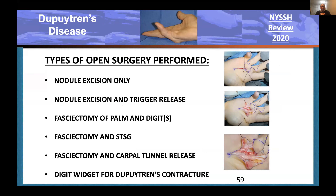Fasciectomy for the palm and digits is still done. Sometimes you still need skin grafts, particularly in cases that have recurred after previous surgery at the base of the fifth finger. Flaps can fail, and while you can get the cord to pop with collagenase, the skin deficiency that results heals and drags the finger back into flexion. A fasciectomy can be done combined with carpal tunnel release—once thought inappropriate, it's now felt to be safe. Occasionally a digit widget can be used to help extend a stiff PIP joint after disrupting the cord.